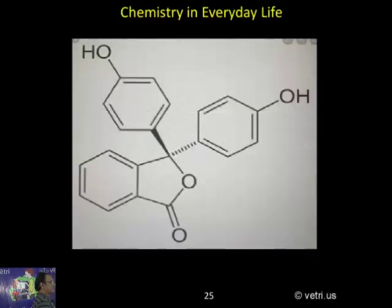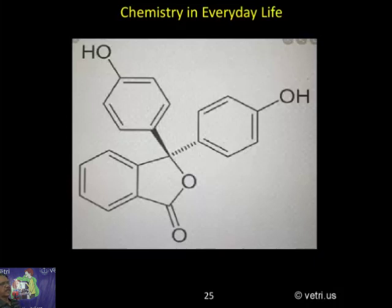Just see the structure here — this is the phenolphthalein structure. There are two theories according to indicator behavior: one is acid-base theory, another is quininoid theory — quininoid and benzenoid theory. This is acid-base theory.